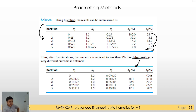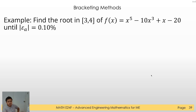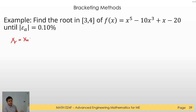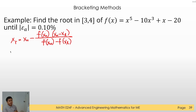Let's have a new example for false position. The formula for solving using false position — take note of this — we have XR, that is equal to XU minus F of XU, and then we have XU minus XL, all divided by F of XU minus F of XL.